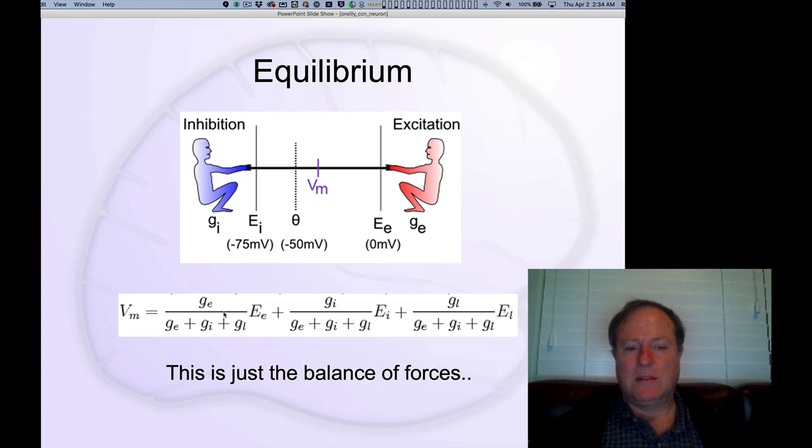And that point, this equilibrium point, is literally just the ratio of how strong the GE is, how much excitation you're getting, relative to the total that you're getting from everybody else. So GE over the sum of all the conductances into the cell.